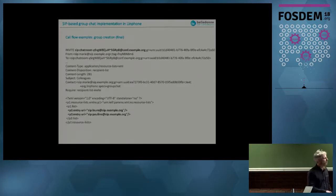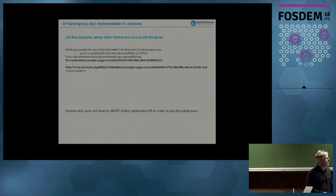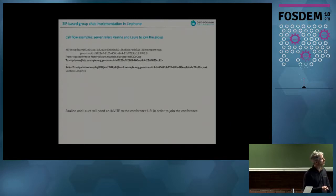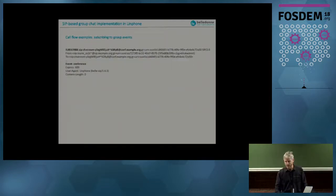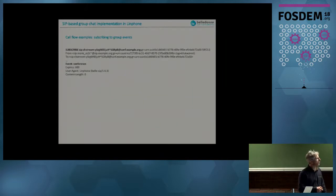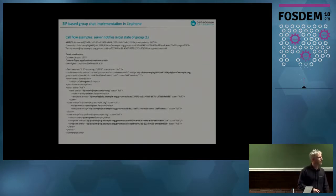A new INVITE is then sent to the newly allocated conference address saying Lore and Pauline are invited. If we want to add more participants later, we put more people in this list. The conference server has to inform Lore and Pauline that they are invited and requested to join. For that, we use the REFER request of the SIP protocol, with a Refer-To header giving Lore and Pauline the unique SIP address of the conference. Each client then sends a SUBSCRIBE message to the unique conference address to receive events about the conference.